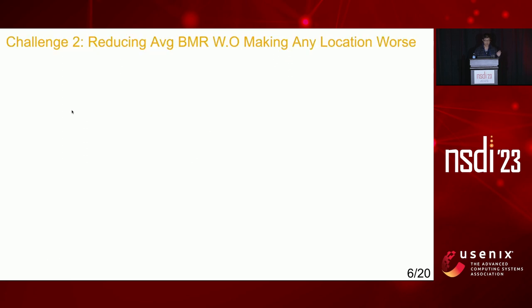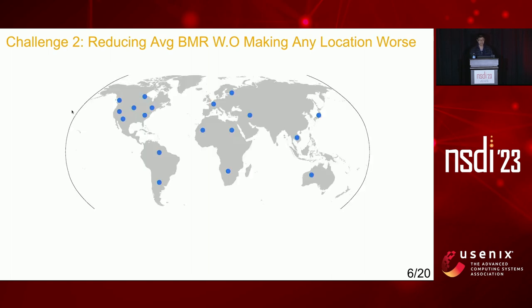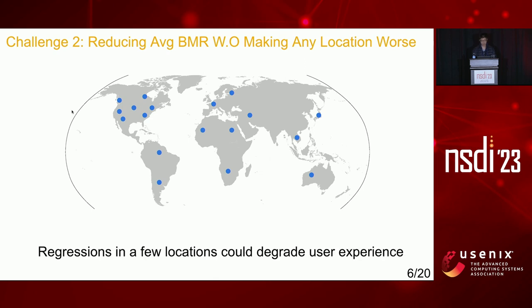Challenge two is about algorithm robustness. YouTube CDN contains a large number of locations, and byte miss ratio regression in even a few locations could result in degraded user experience. This concern is exacerbated for learning-based algorithms, as their theoretical bound is not as good and they are proven to overfit.